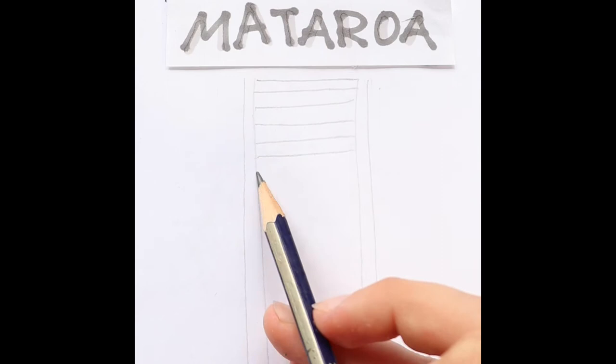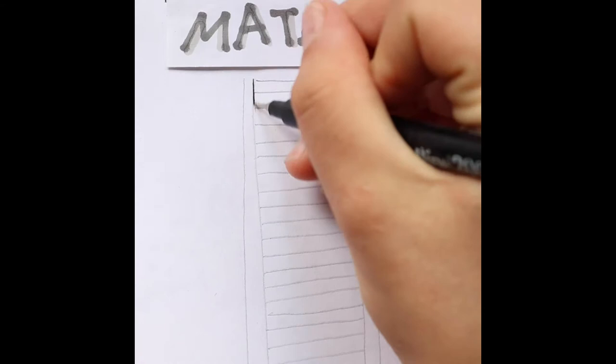One tip I would give is if you're drawing without a ruler like I am, anchor your hand to the page so it makes it more steady. Other than that, the meaning is what I wanted to cover.